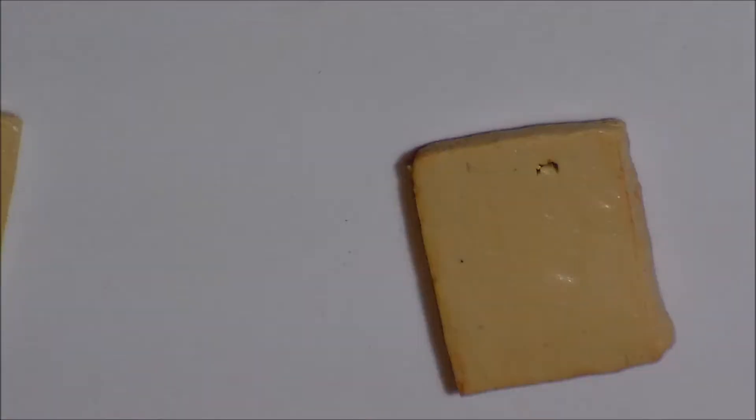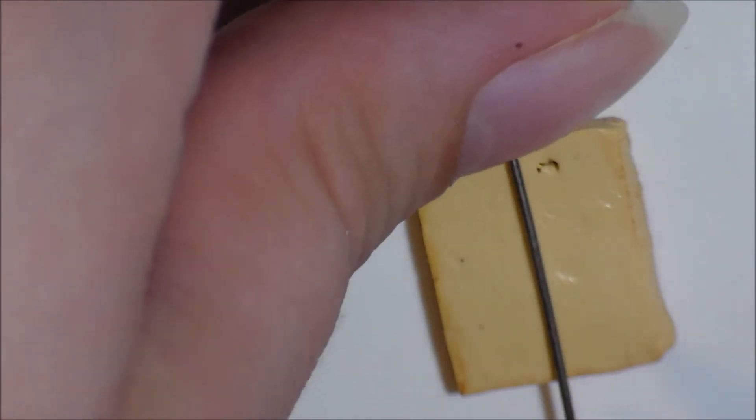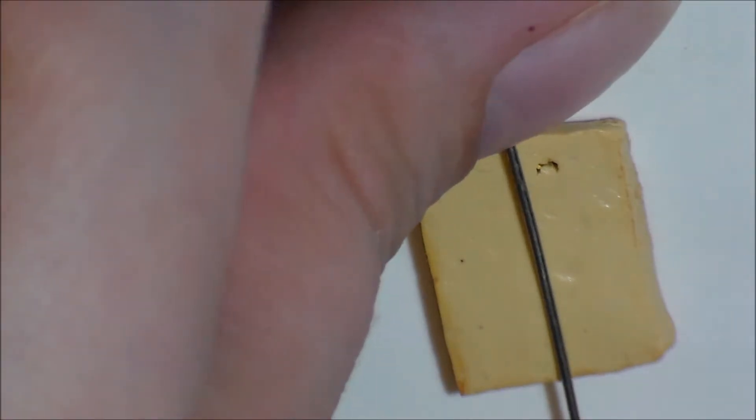Then flip one of them over. If you want this to be a charm, this is the time to add a head pin or an eye pin. I used an eye pin and measured about where I needed the loop to go. Then cut and placed it in the middle of my waffle half.